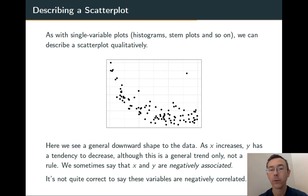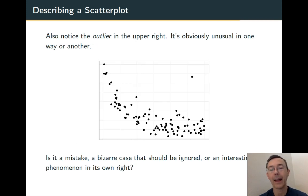One other thing to observe in this plot is that we have that outlier in the upper right. It's a point that lies outside the usual pattern of the data. Outliers can fall into several different categories.